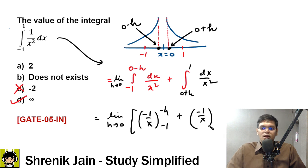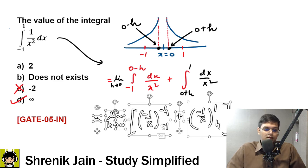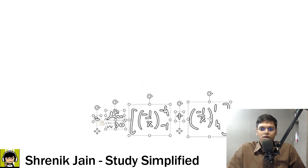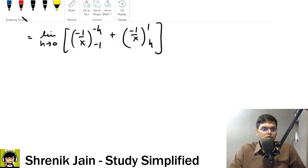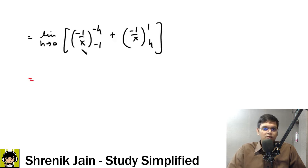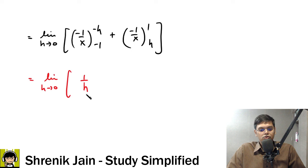So now please do upper limit minus lower limit and tell me what's the answer. Guys, guys, guys, tell me what's the answer. Upper limit, if you put, then see limit h tends to 0, upper limit is giving you 1 by h, correct. Then minus lower limit.